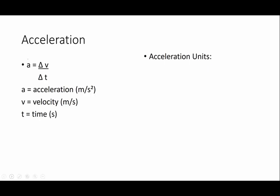So, here's the equation for acceleration. This is another equation I highly recommend you write down and put on your formula sheet. Acceleration is change in velocity divided by change in time. Acceleration units are meters per second squared. Velocity in MKS units is meters per second. And time, of course, is seconds.